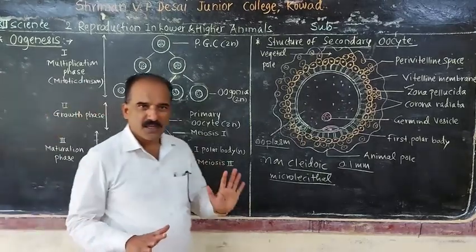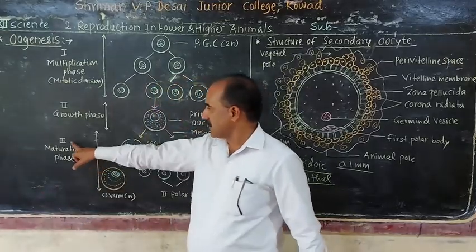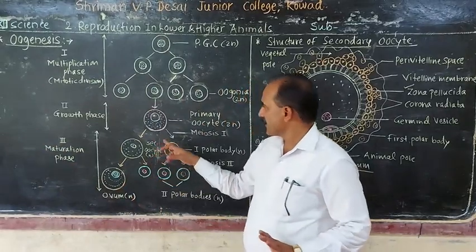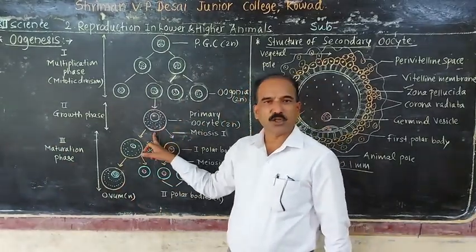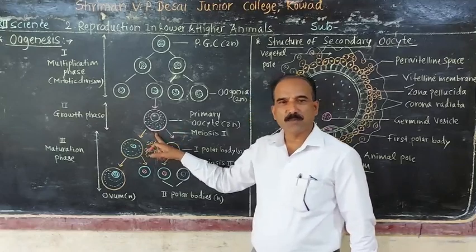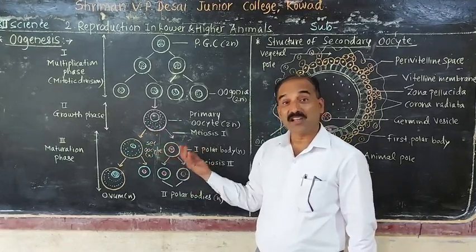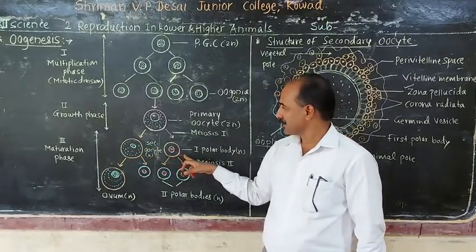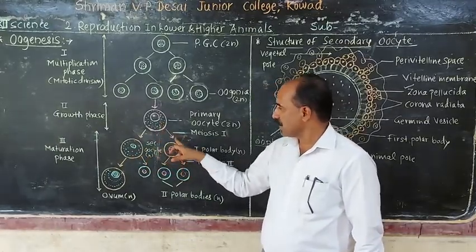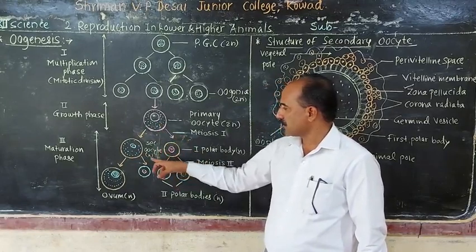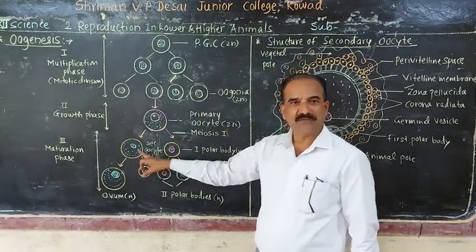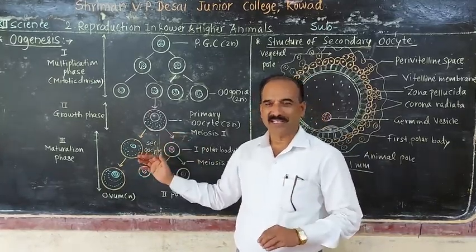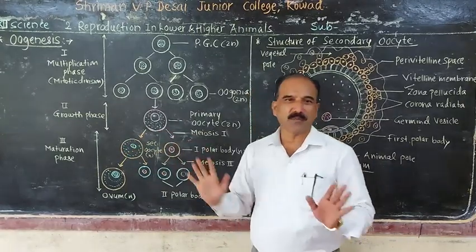The third step is the maturation phase. Here, the primary oocyte undergoes the first meiotic division — that is, reduction division — to produce two unequal cells: the secondary oocyte and the first polar body, both of which are haploid, containing half the number of chromosomes.